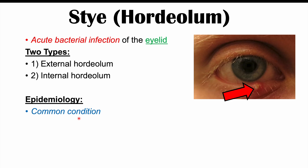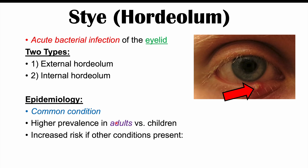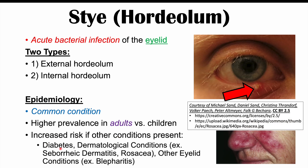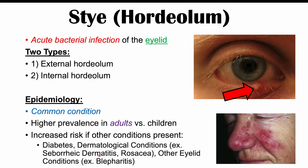Eye styes are a relatively common condition. There isn't a lot of epidemiological data on prevalence differences between patient types, but it is known that there is a higher prevalence in adults versus children. There's also an increased risk if you have other conditions, including diabetes, dermatological conditions like seborrheic dermatitis or rosacea, and other eyelid conditions like blepharitis, which is an inflammation of the eyelid.